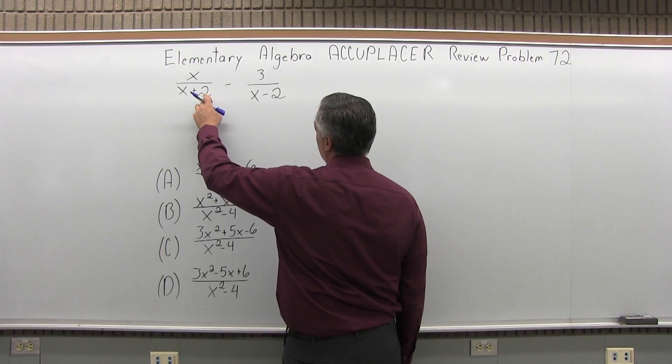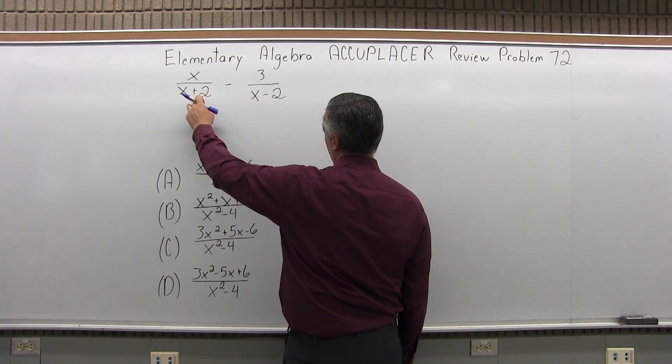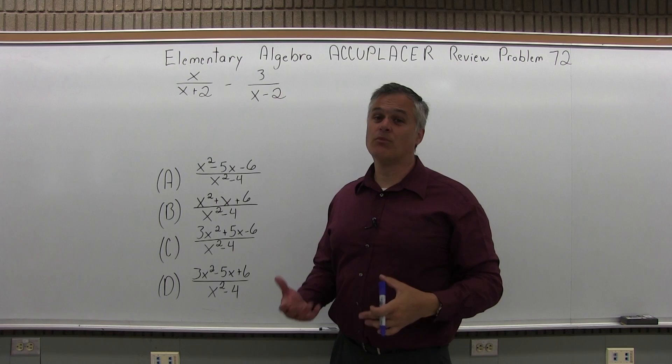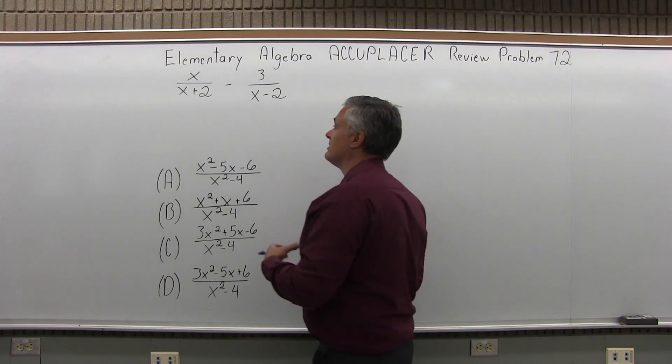So the common denominator will be one denominator times the other denominator. It's going to be x plus 2 times x minus 2. That's what we have to turn both denominators into, then we can combine the numerators.